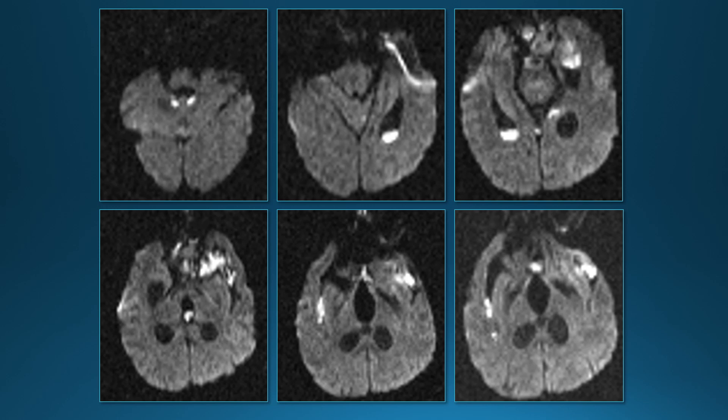On diffusion-weighted images, the pus has restricted diffusion, similar to the way pus within a pyogenic brain abscess has restricted diffusion. We can see restricted diffusion settling in the dependent portions of the ventricles and in the fissures, due to the pus mixed in with the CSF. We don't always see this with pyogenic meningitis, but if you see it, that's a pretty strong sign you're dealing with a pyogenic infection.